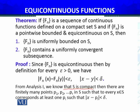From analysis, we recall that if the set S is compact, then there are finitely many points in S such that for every x in S, there corresponds at least one point pi such that |x − pi| < delta. This follows from the definition of compactness.